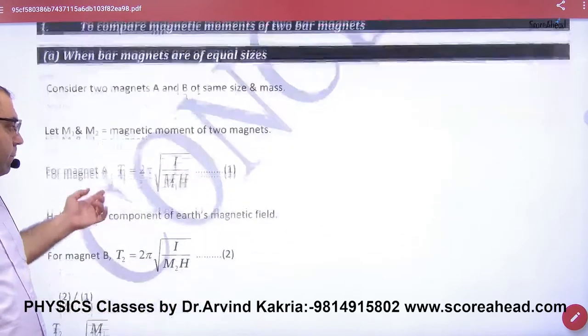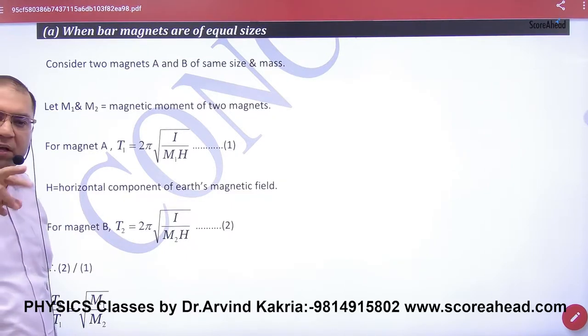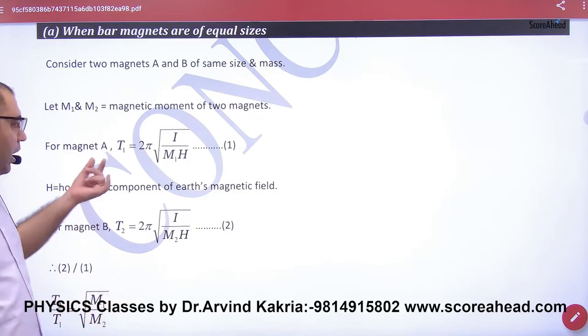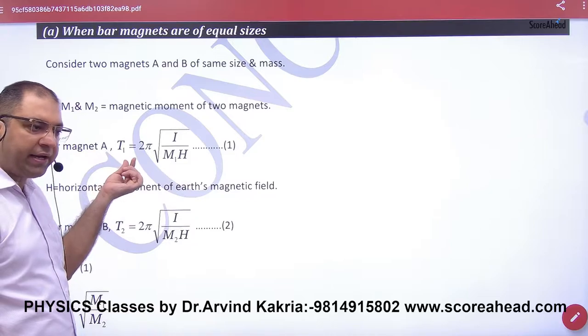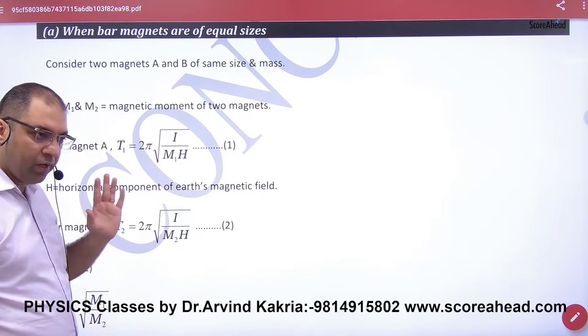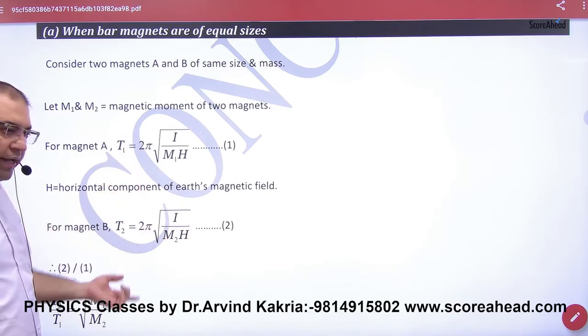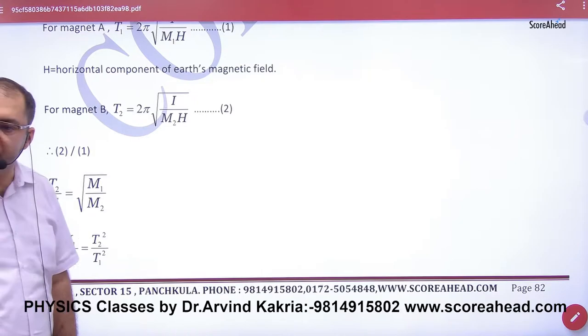If they are equal size magnets, then the moment of inertia will be the same. The size is the same, so moment of inertia is the same. So you keep it in the meter and calculate the time period. T1 for magnetic dipole moment M1, T2 for M2. Divide, square, and the answer is done. If the magnet is equal size, then time period can be calculated.